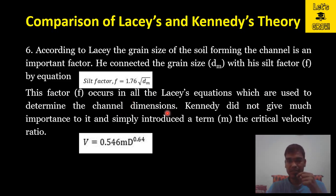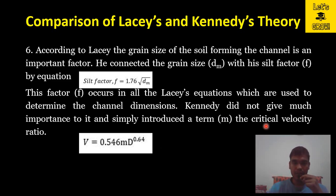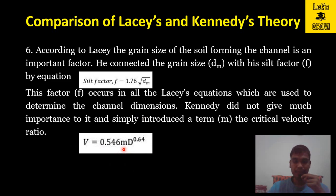But Kennedy did not give much importance to grain size and simply introduced a term m, the critical velocity ratio, defined as the mean velocity of flow divided by the critical velocity. Kennedy did not make much effort to account for particle size — he simply introduced this term m in the critical velocity formula, so no proper provision was made for the grain size of the canal.